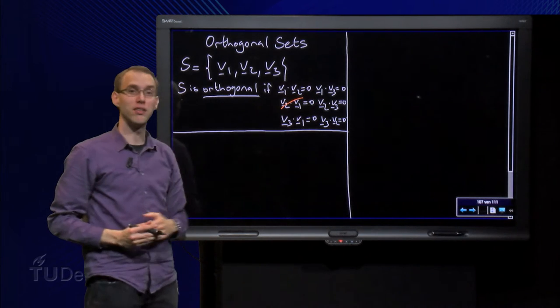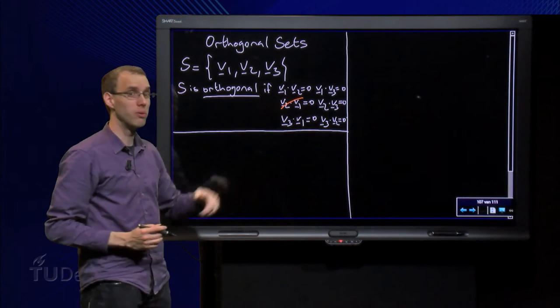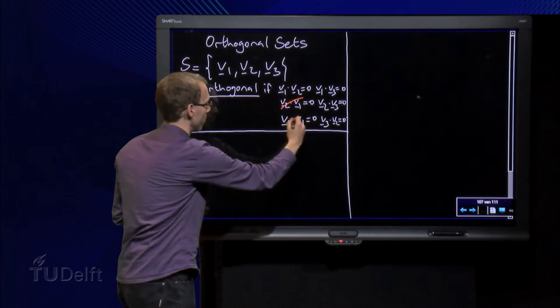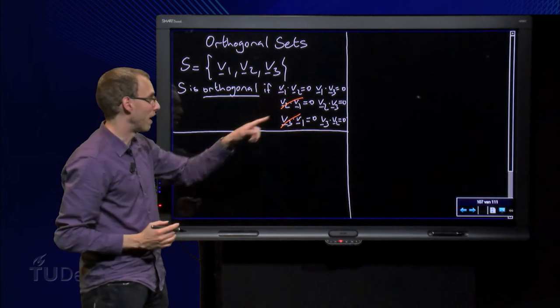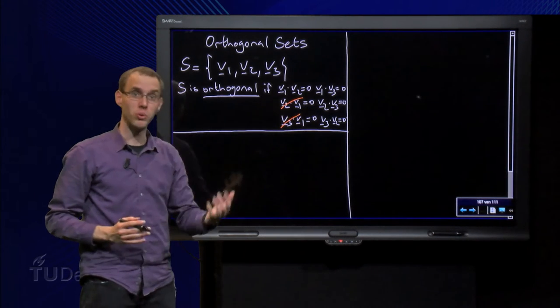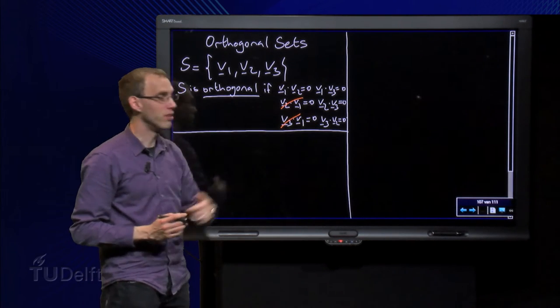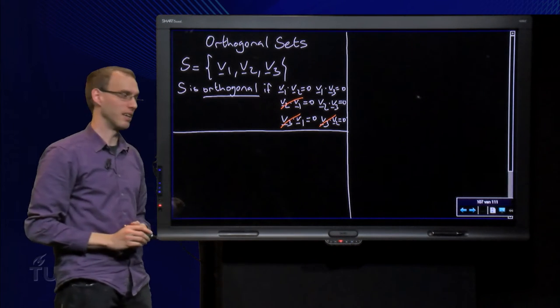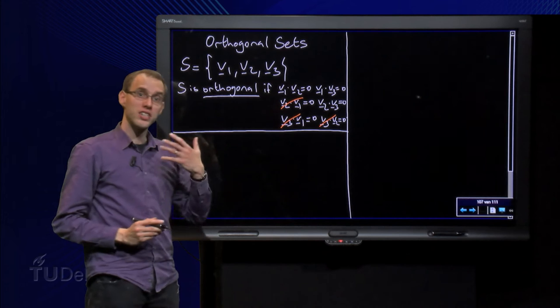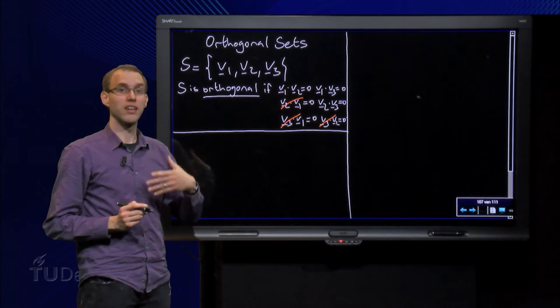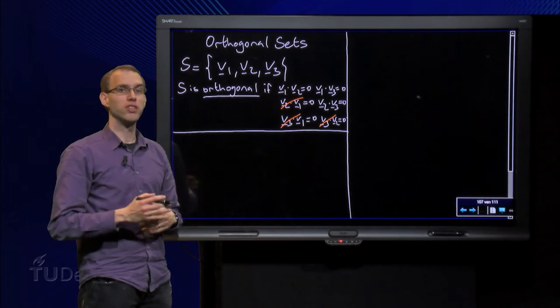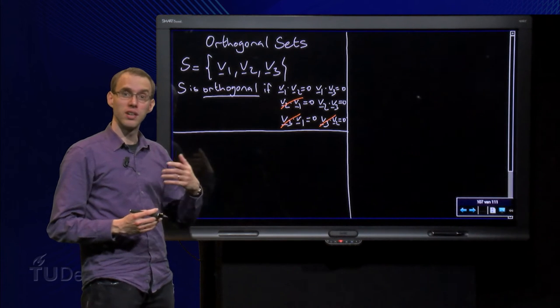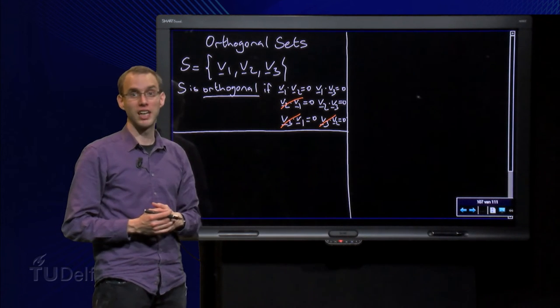If we know V1 and V3 equals 0, then we also know that V3 and V1 equals 0, so no need to check that one. And finally, if we know V2 and V3 equals 0, then we also know V3 and V2 equals 0, so no need to check this one either. So for a set of three vectors, we only have to check three relations. If the sets become larger with four, five, six vectors, then the procedure goes the same, but the amount of relations you have to check quickly grows.